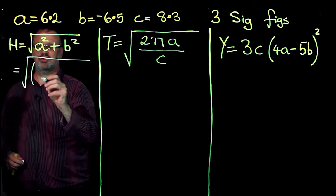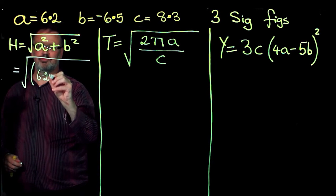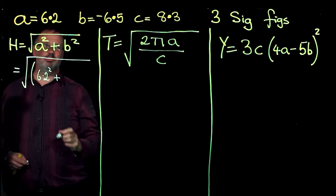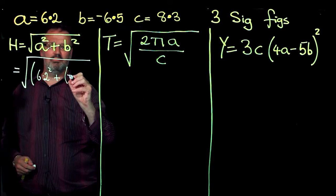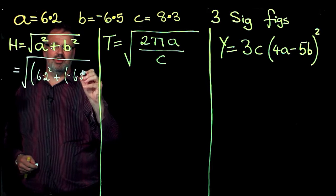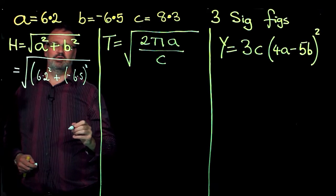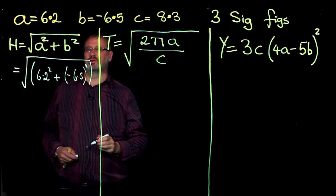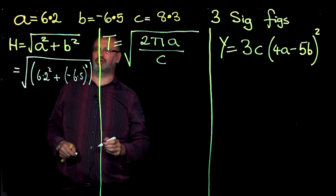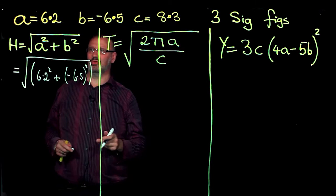6.2 squared, add on, and because my B is negative, I'm going to bring in a second bracket here, minus 6.5 squared, don't forget to close the bracket, and closing the bracket at the end, so that when we push the equal sign, it will work out the whole of this square rooted.